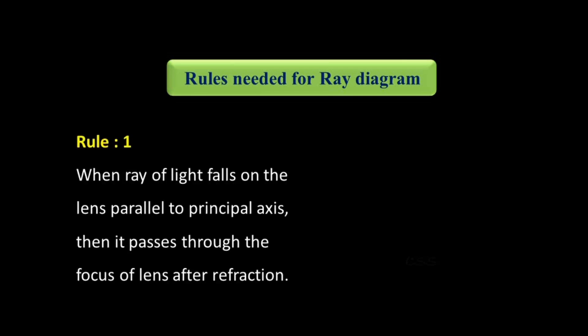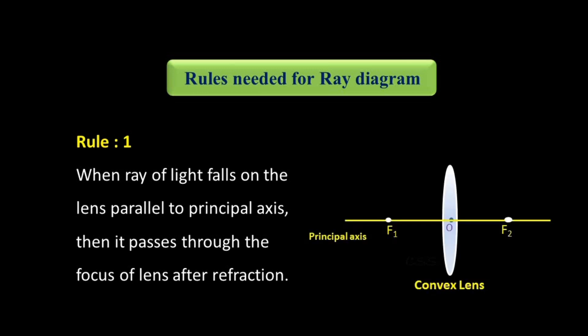For image formation by convex lens, some rules have to be followed. Rule number one: when a ray of light falls on the lens parallel to the principal axis, then it passes through the focus of the lens after refraction. F1 and F2 are the foci of the convex lens. The incident ray parallel to the principal axis passes through focus F2 after refraction.